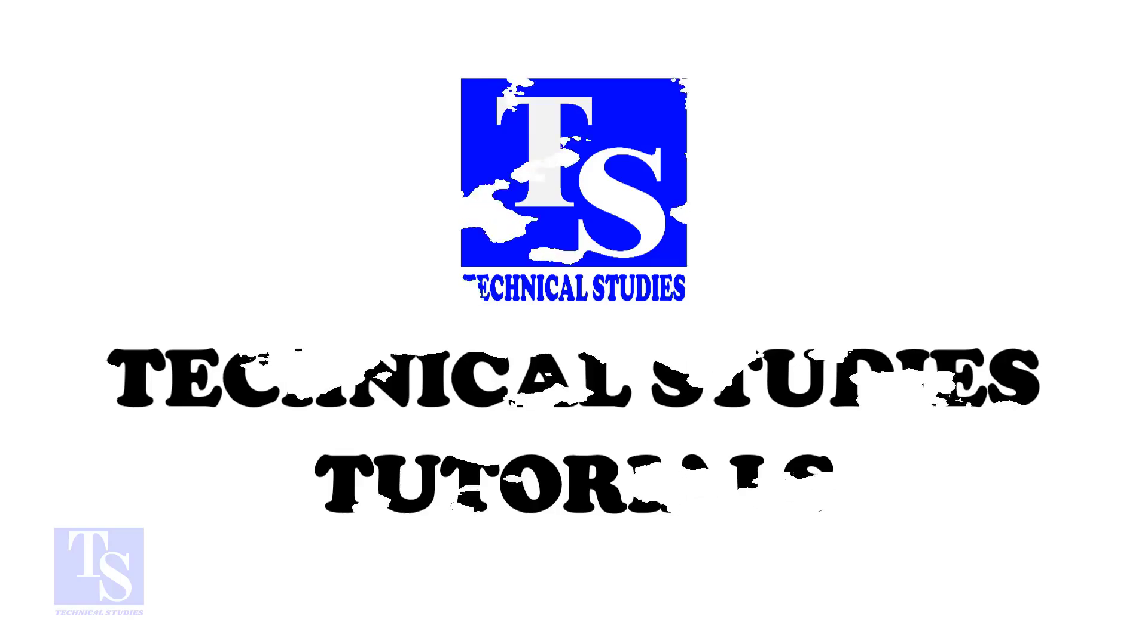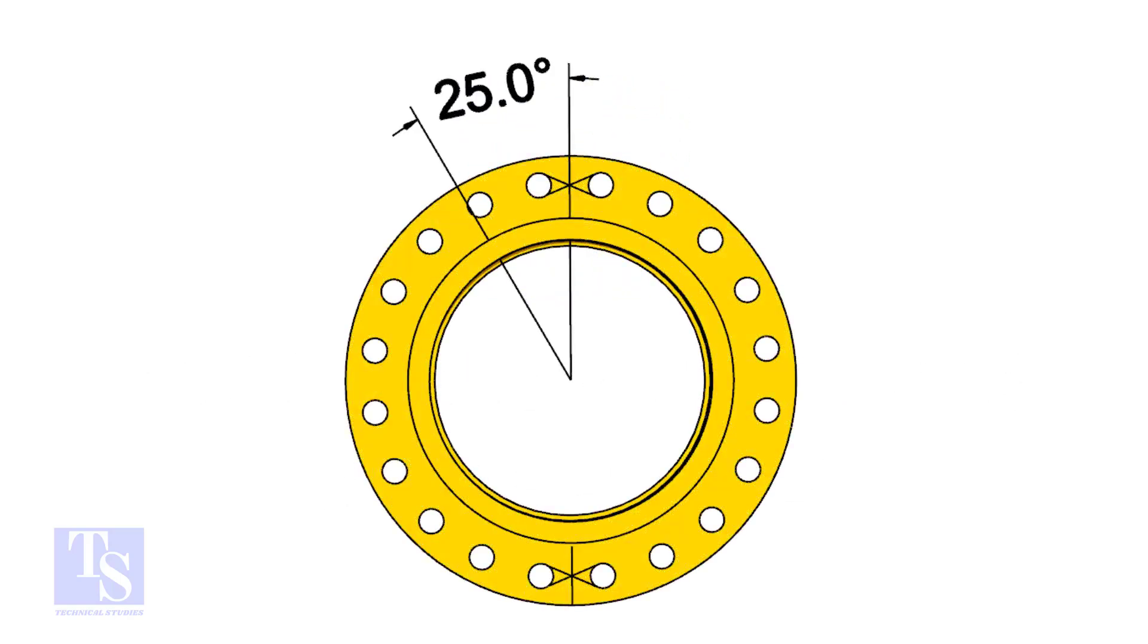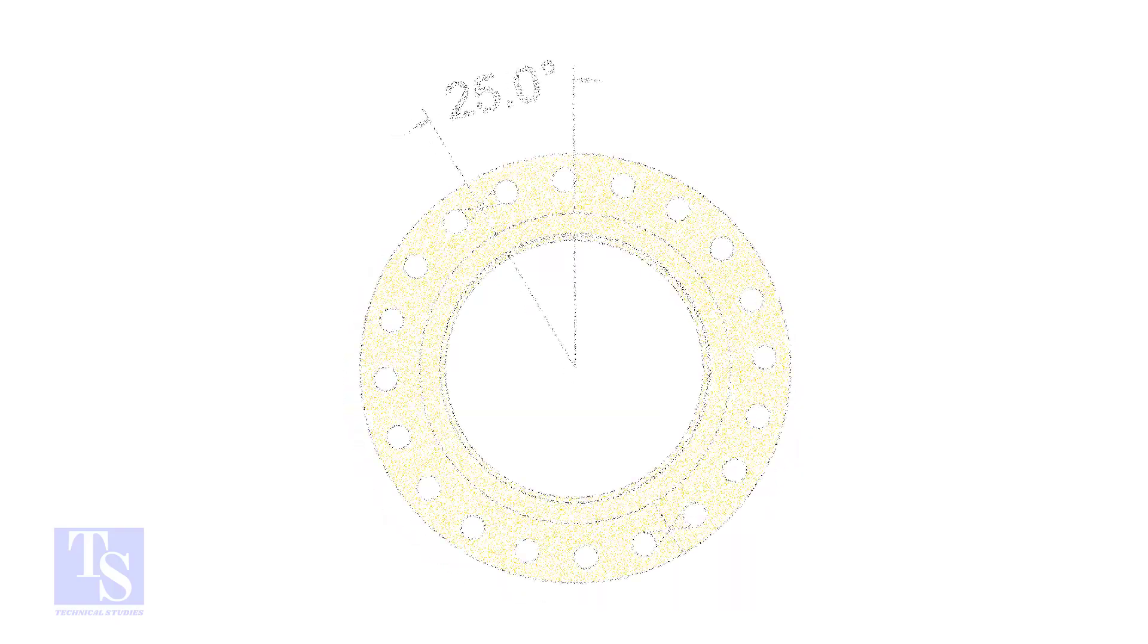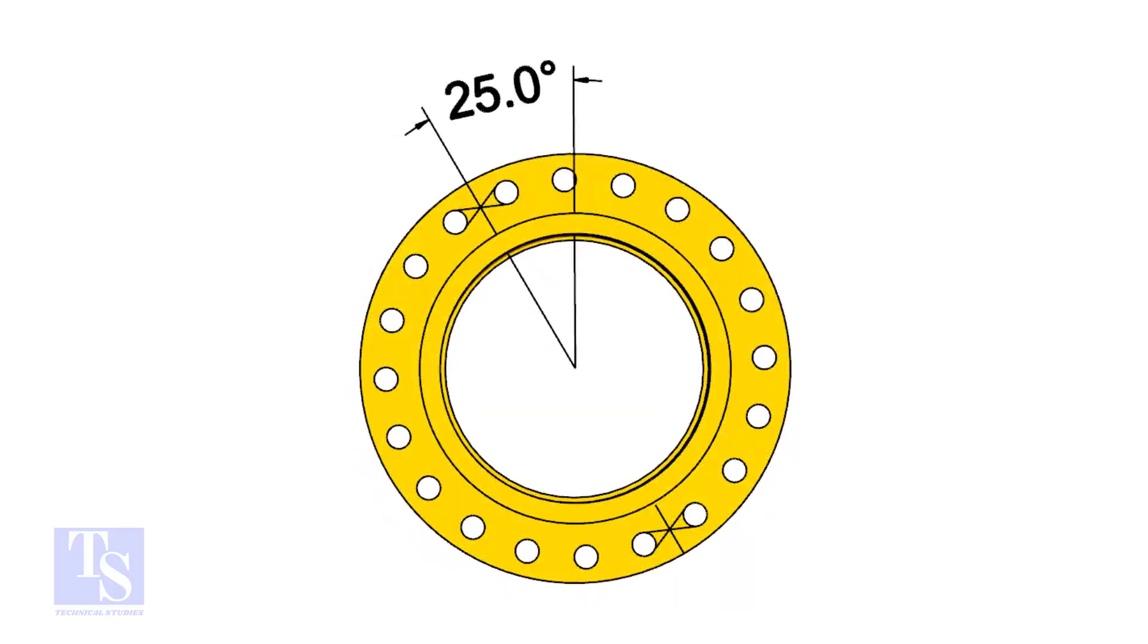The pipe and the flange size is 16 inch, and the flange will rotate 25 degree anti-clockwise. Hope you all know the difference between clockwise and anti-clockwise rotation.